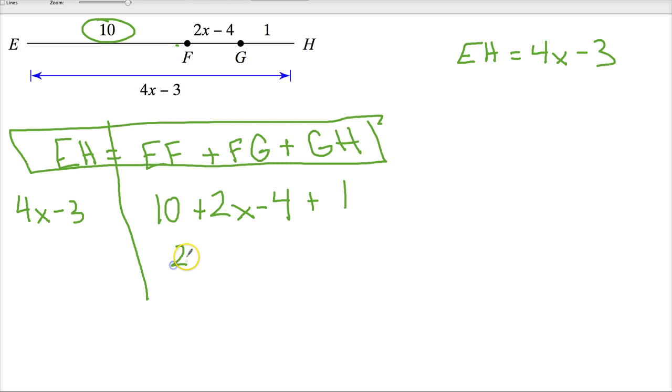So from here, I'm just going to combine like terms. 2x is by itself. 10 minus 4 is 6, plus 1 gives me 7.